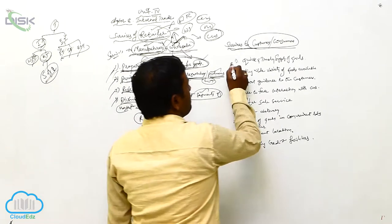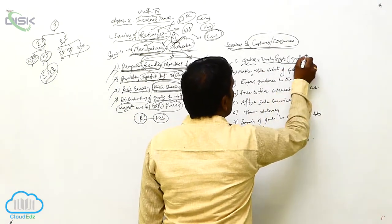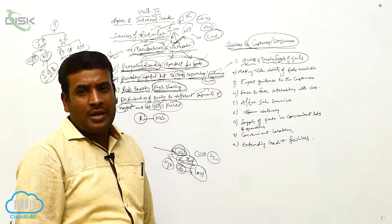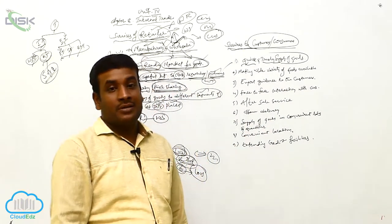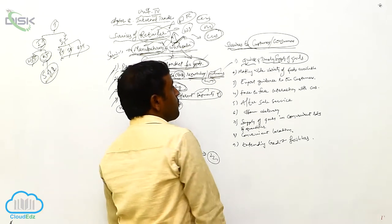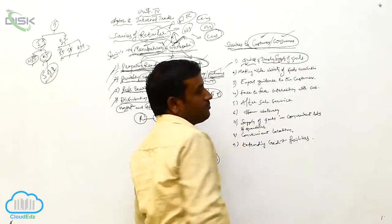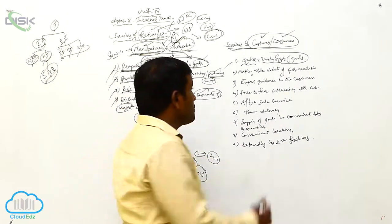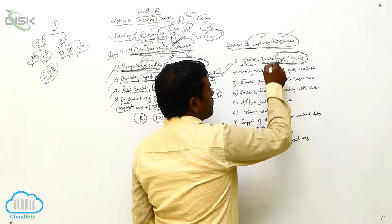Firstly, quick and timely supply of goods. Whenever the customer is wanting the goods, immediately the retailer has to provide. That is the major service which is provided by the retailer to the customers or consumers. So, what is the first service? Quick and timely supply of goods.